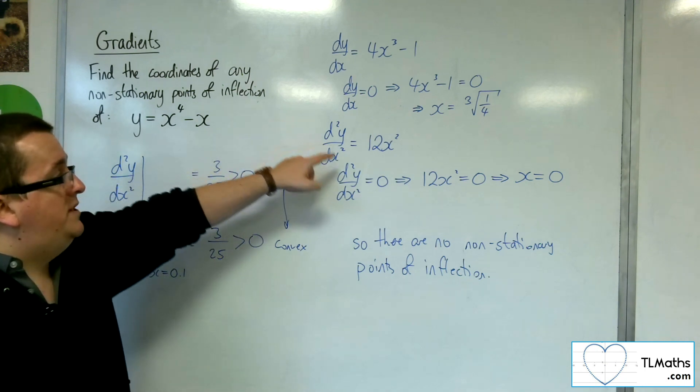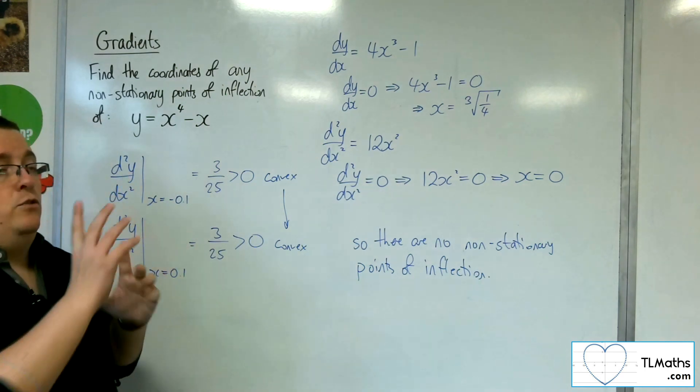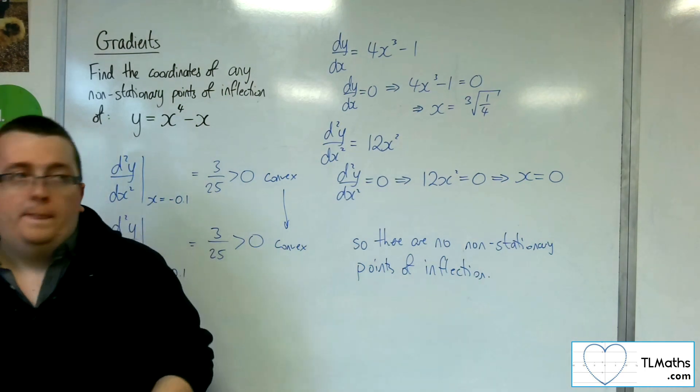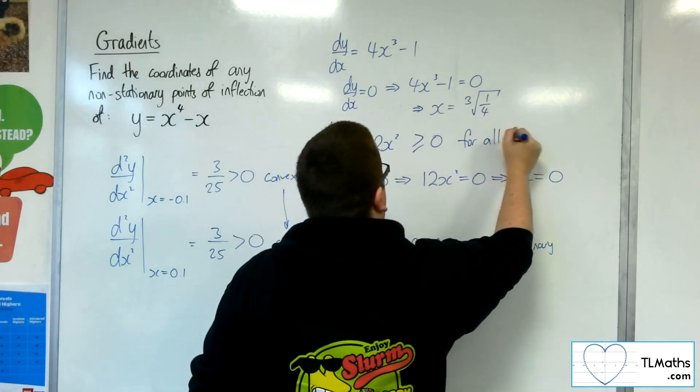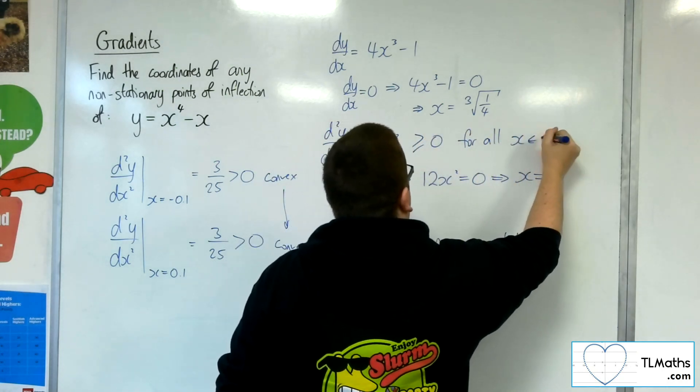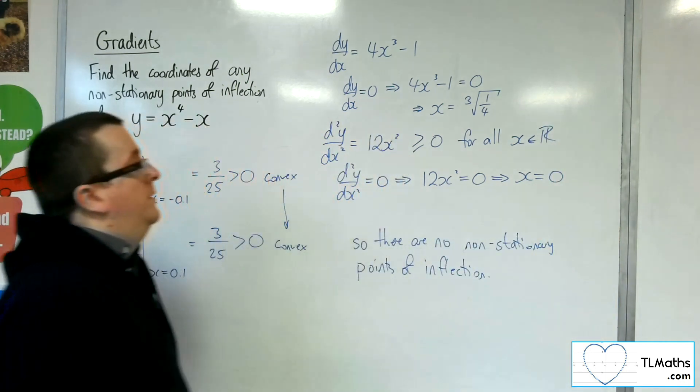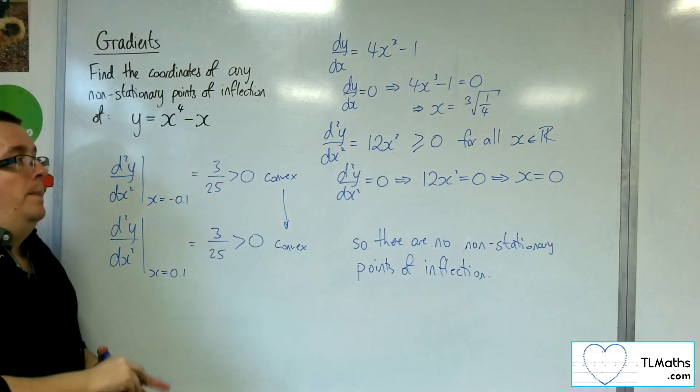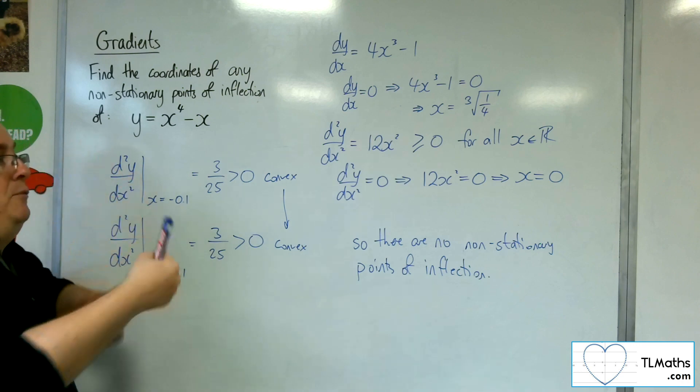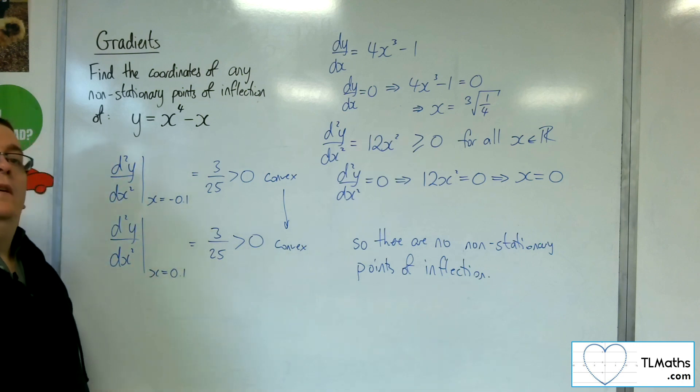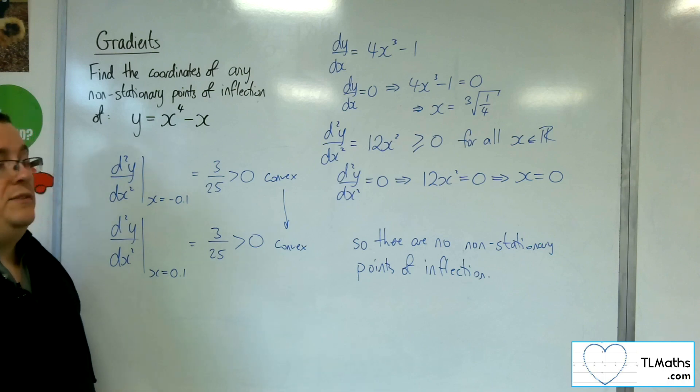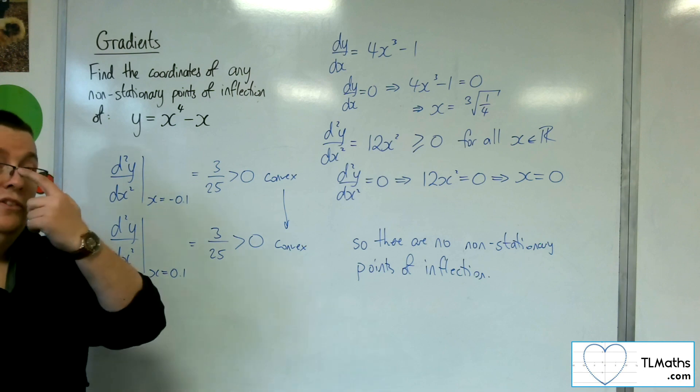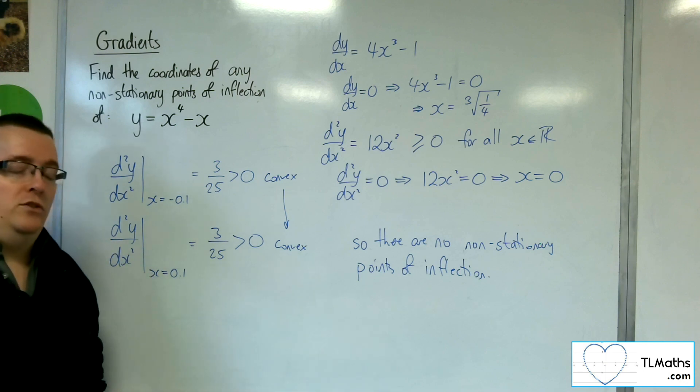In actual fact, because the second derivative, 12x squared, that is greater than or equal to 0 for all real values of x, that means that, except when x is 0, the curve is convex for every single point, apart from when x is 0. So it is never concave, so there are no points of inflection at all on this curve.